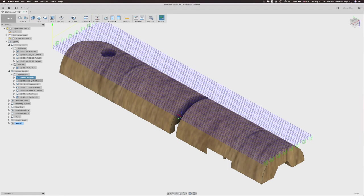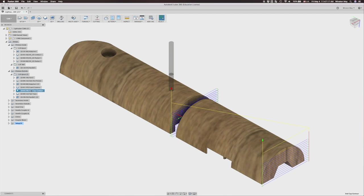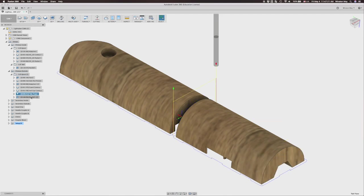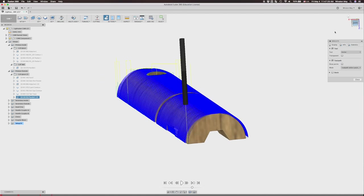Again, I'll first start with an adaptive clear to remove the bulk of my material, stopping about a millimeter from the bottom of my stock. If I cut out my part completely, it'll separate from my stock prematurely.